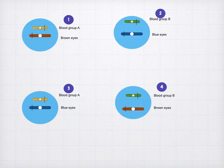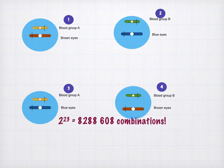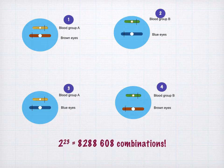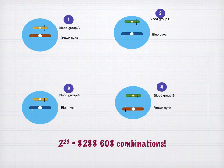The four resultant cells are different from one another. With more homologous pairs, the number of possible combinations becomes enormous. In a human, you've got 23 pairs of chromosomes, so it has the potential for 2 to the power of 23, which means 8,388,608 combinations.